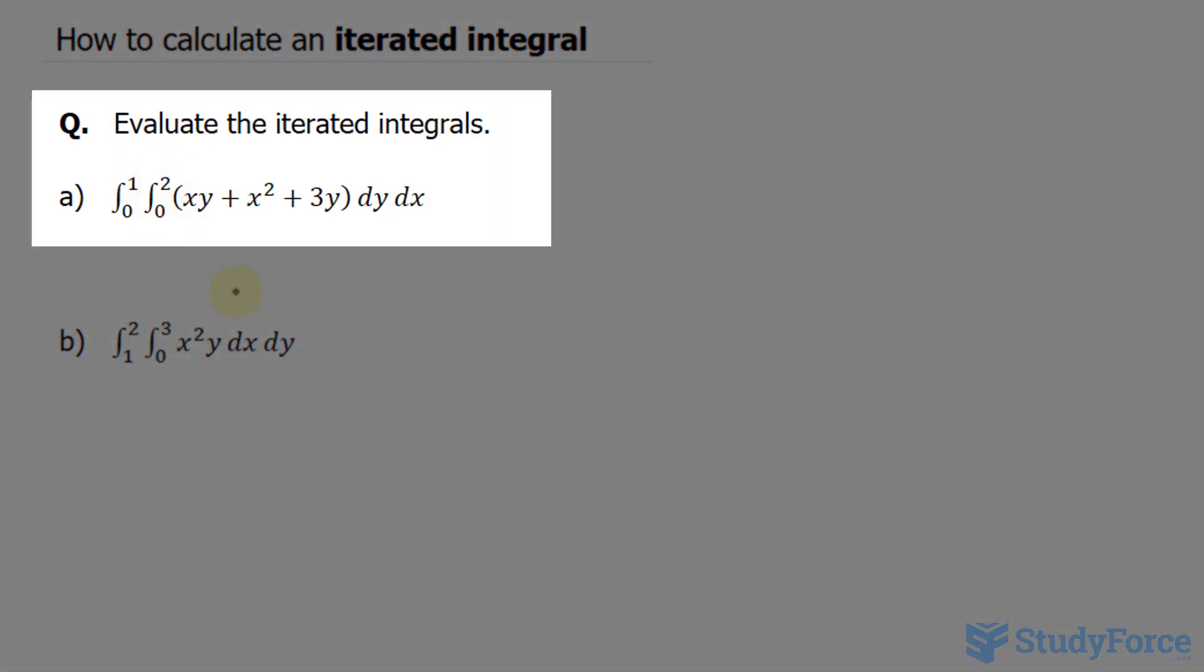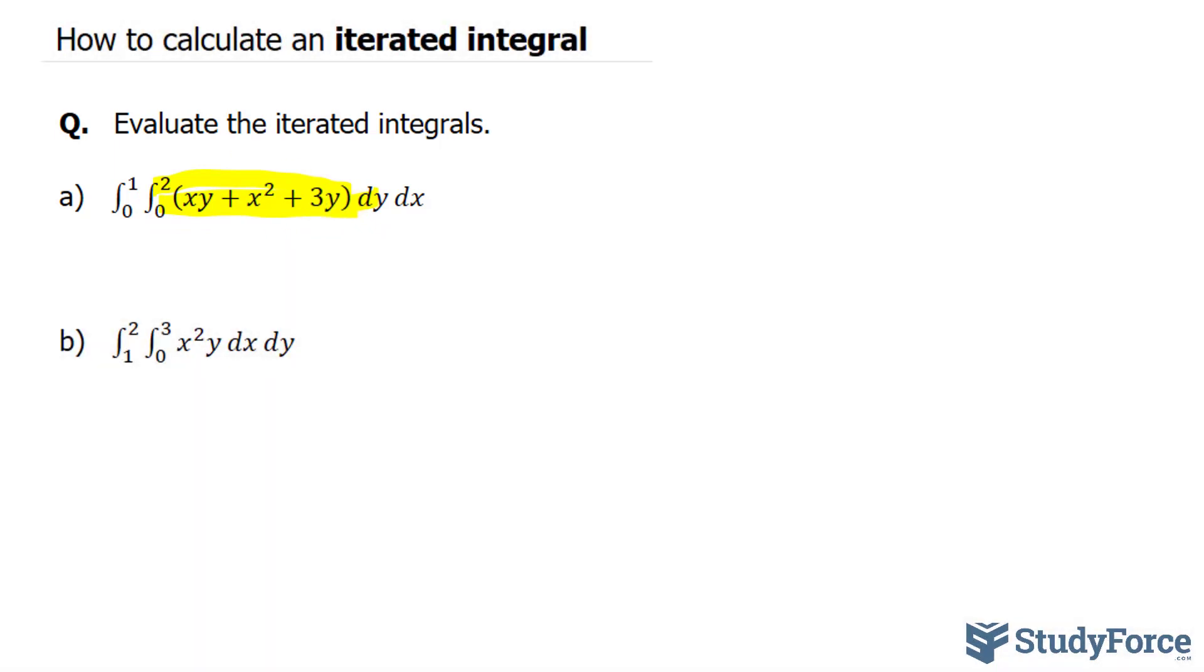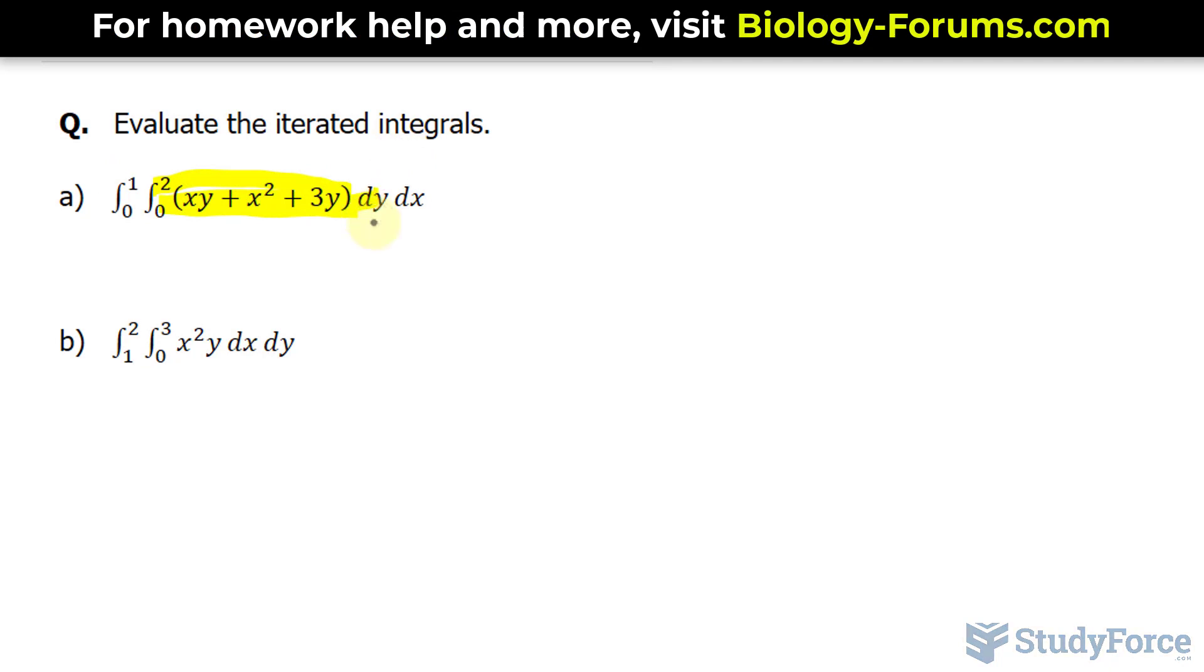In question A, we have to find the integral of the integral of this internal function with respect to y and then with respect to x. The trick to doing these is to find the integral from the inside out. So concentrate on the answer to this, and then once you find the answer to that integral, then you integrate it between 0 and 1 with respect to x. Let's get started.